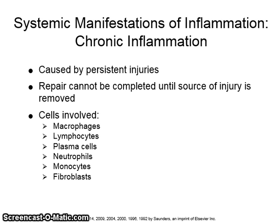Chronic inflammation is caused by persistent injuries. Repair cannot be completed until the source of the injury is removed. The cells involved in chronic inflammation are macrophages, lymphocytes, plasma cells, neutrophils, monocytes, and fibroblasts.